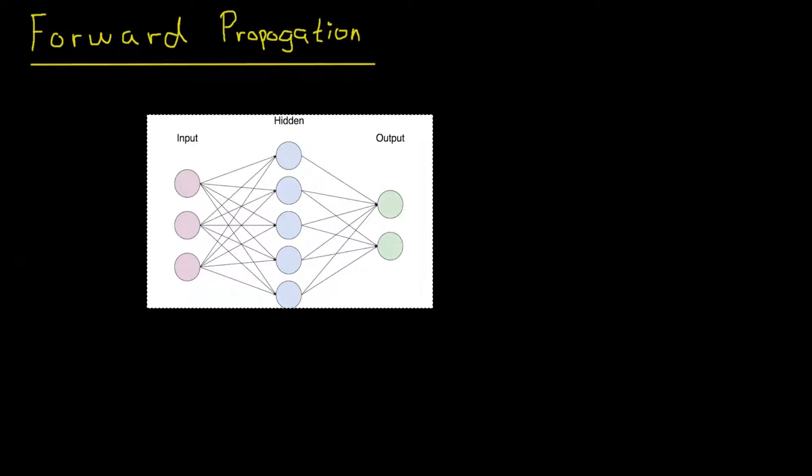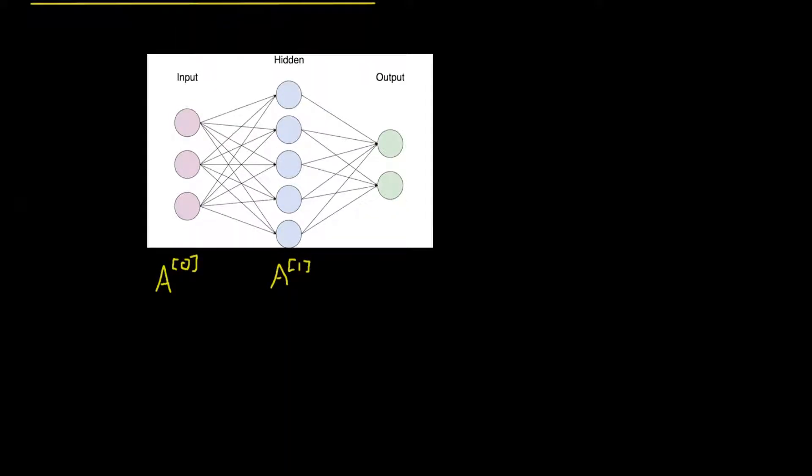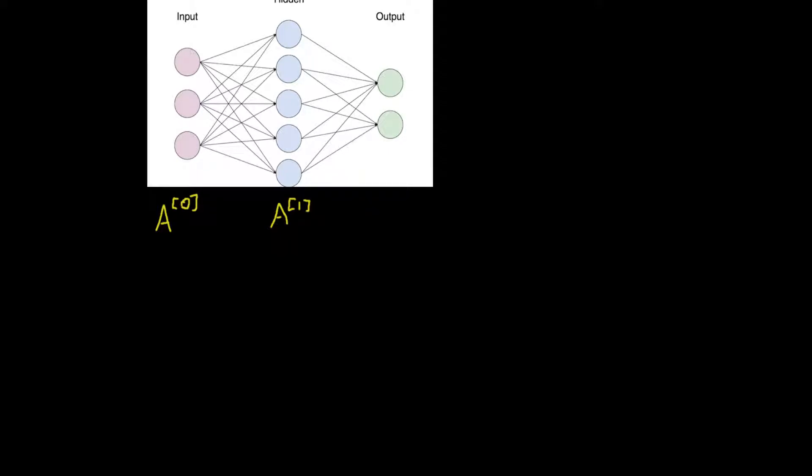Continuing from the last video, we now want to compute all the steps through the forward propagation in the neural network. We looked at how these calculations can look like for a specific node and for a specific training example to understand how it works in the simplest case. But we now need to generalize this.